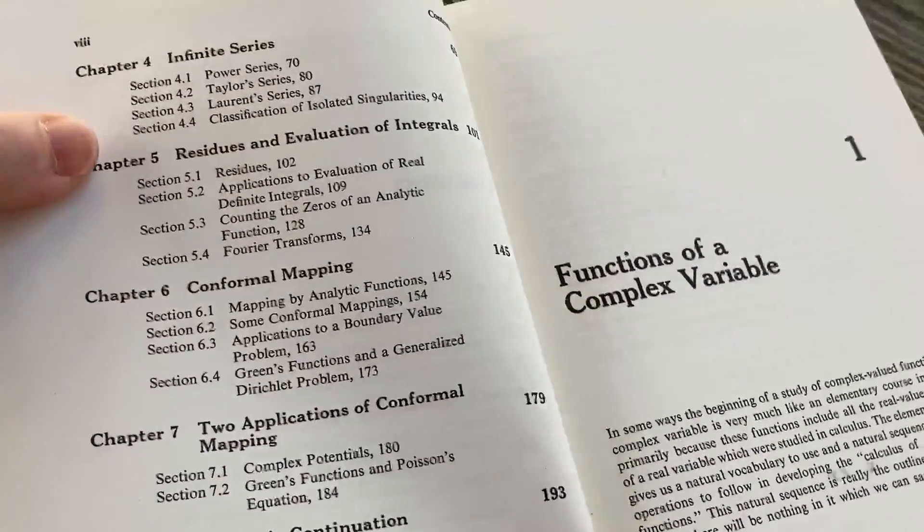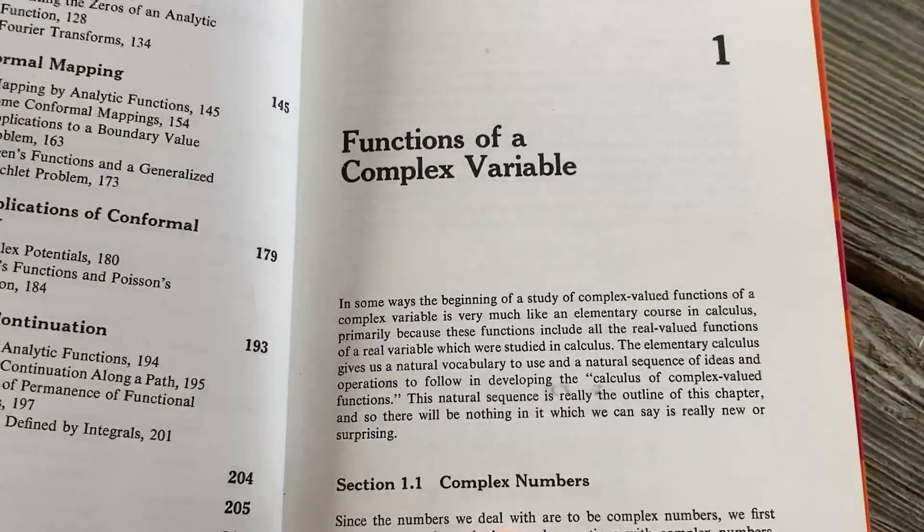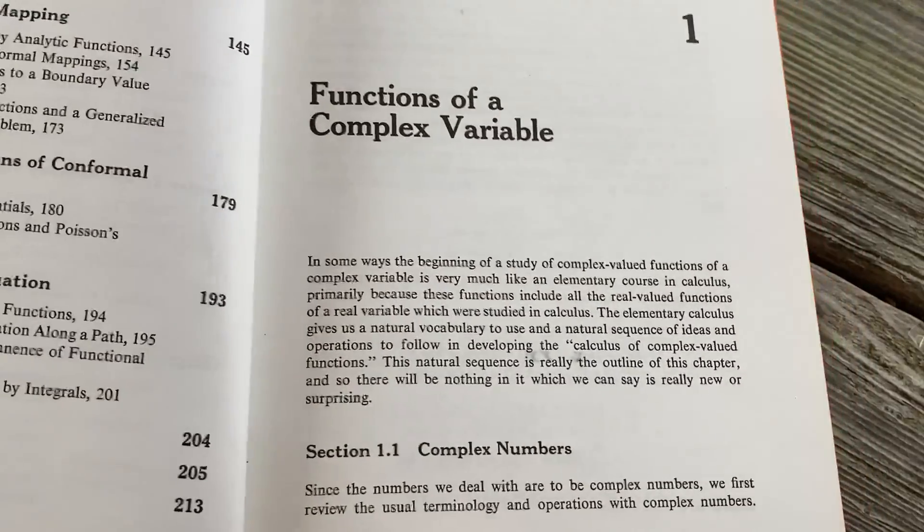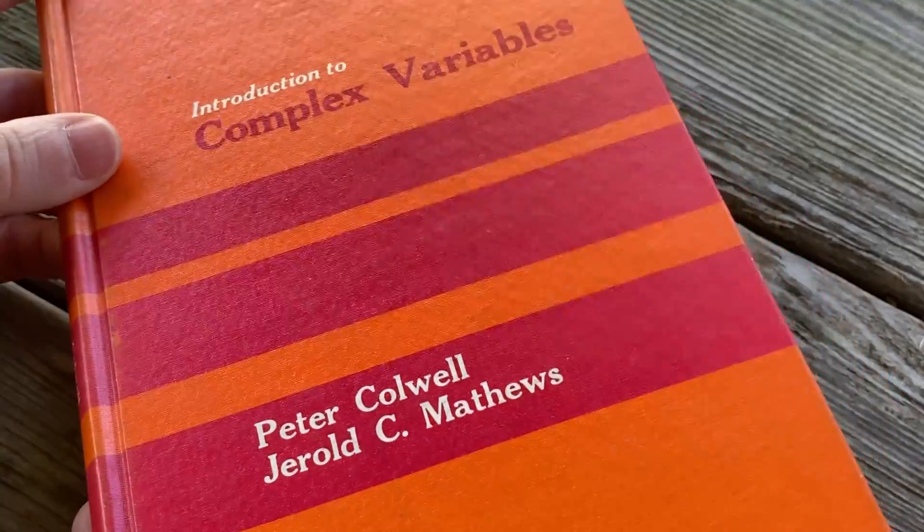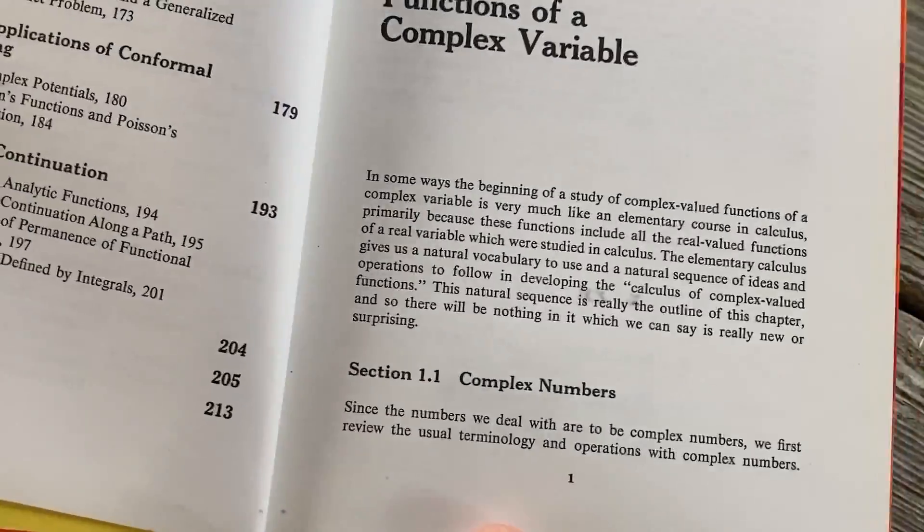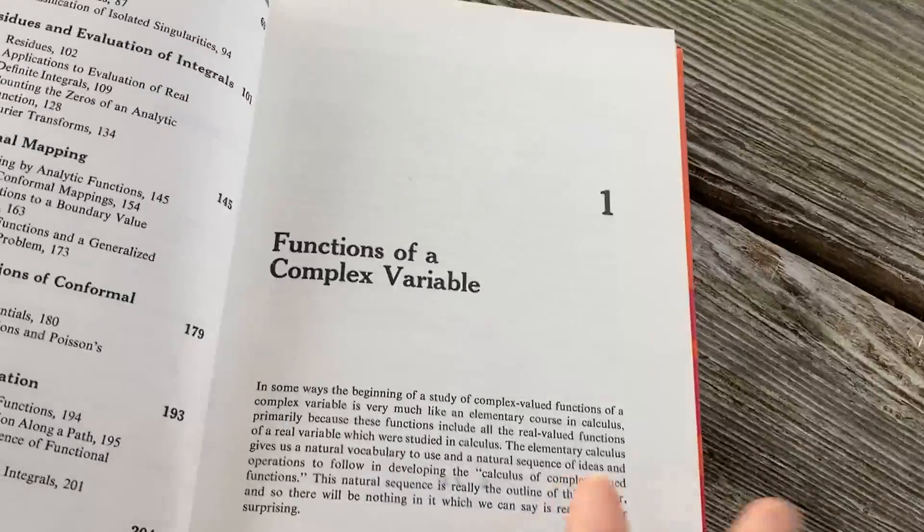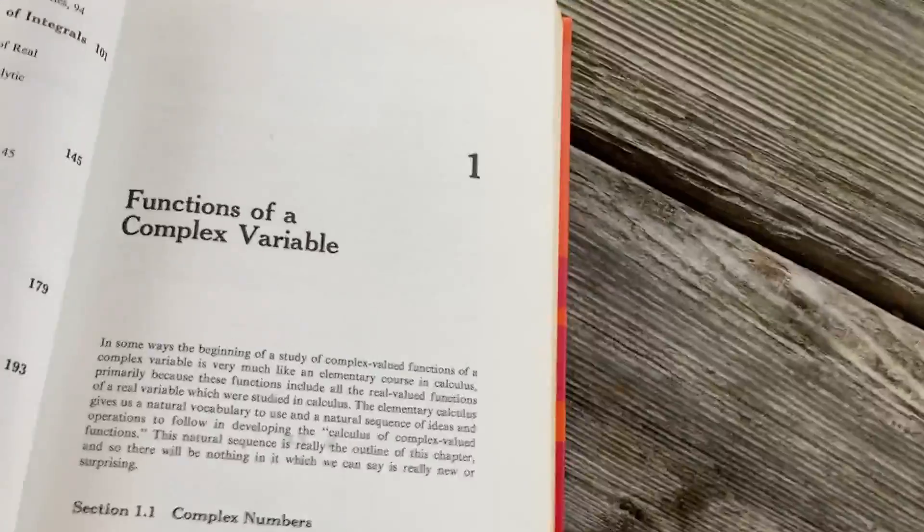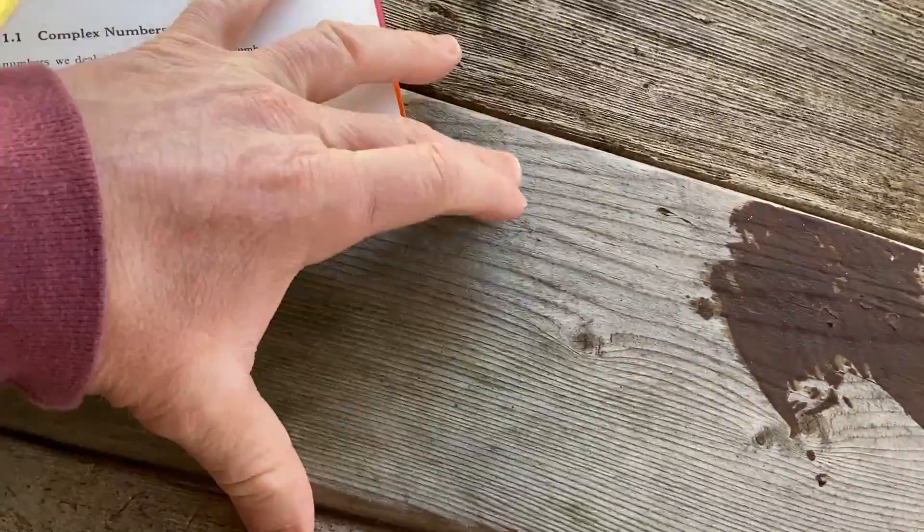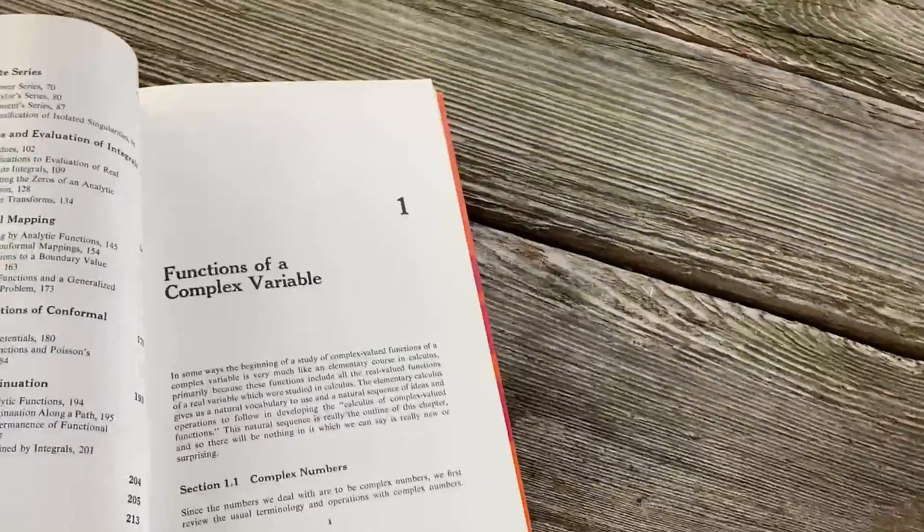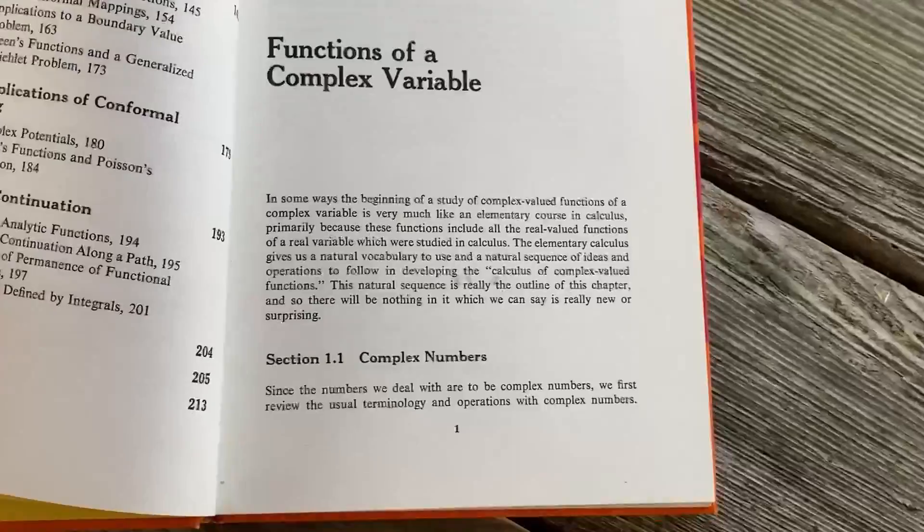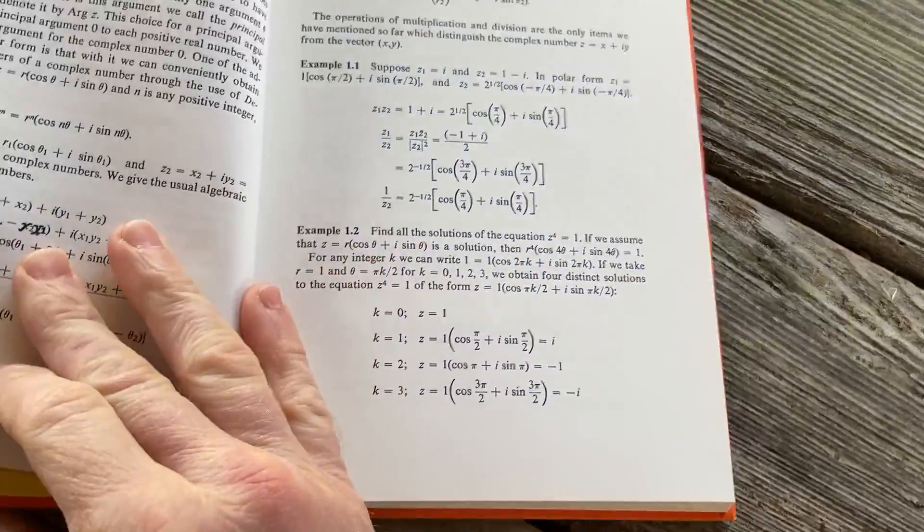As I was saying earlier, the infinite series stuff is the same. So if you know some calculus, you can actually jump into it and start teaching yourself complex variables with this old book from 1973, which I think is pretty cool. You just need a wooden table too. No, you don't need the table. This table is actually not even. There's a board here that I had to fix.